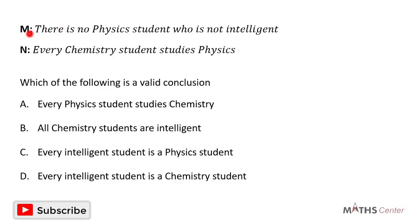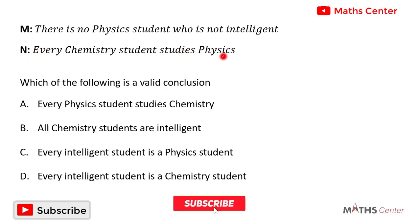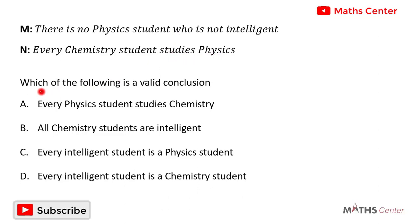Statement M is: there is no physics student who is not intelligent. Statement N is: every chemistry student studies physics. Using these two statements, which of the following is a valid conclusion? One of the four options is a valid conclusion based on these two statements, and the question wants us to select that option.